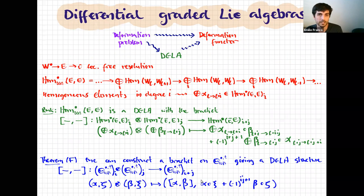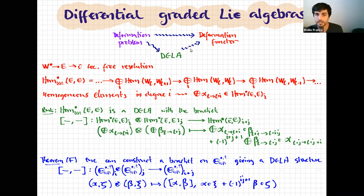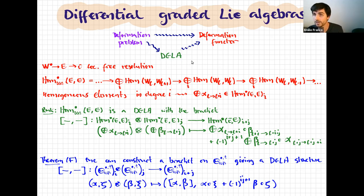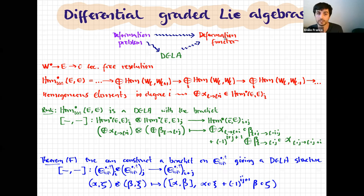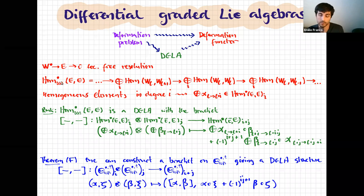Let me finish by noting that every deformation problem has an associated differential graded Lie algebra (DGLA), which naturally gives the deformation functor via the Maurer-Cartan equations. In the case of coherent sheaves, this DGLA is Hom(E, E) in the derived category. To construct a DGLA on this complex, one takes a locally free resolution: in degree zero we have the direct sum of Hom spaces between locally free sheaves, in degree minus one the Hom spaces between consecutive locally free sheaves, and so on.